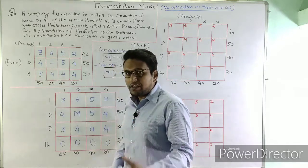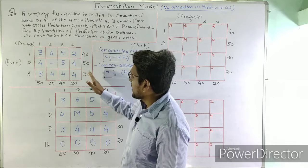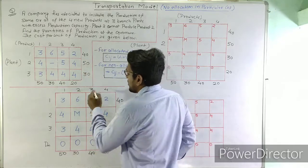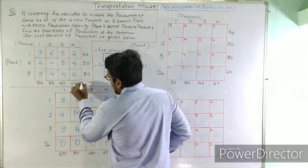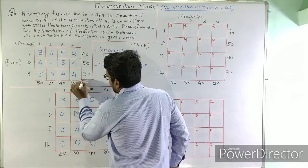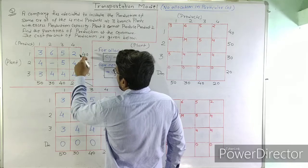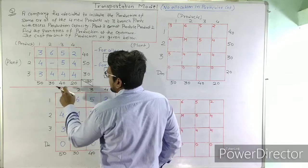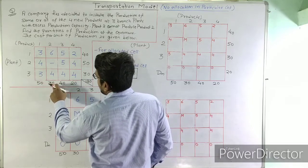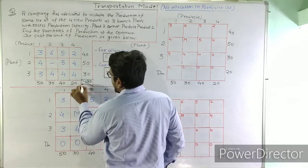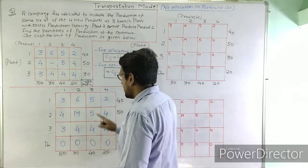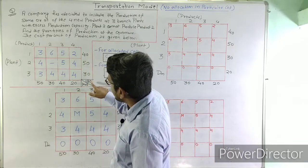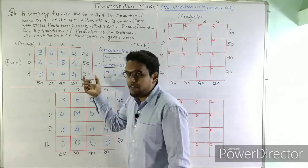The first thing we notice is that the supply and demand are not equal. The total supply is 40 plus 50 plus 30, which is 120. The total demand is 50 plus 30 plus 40 plus 20, which equals 140. So the demand is 140 and the supply is 120, meaning we have an unbalanced transportation problem.